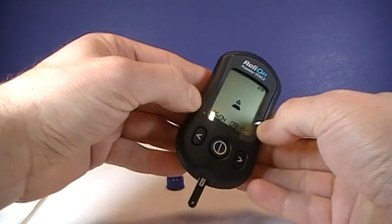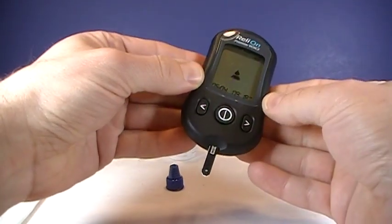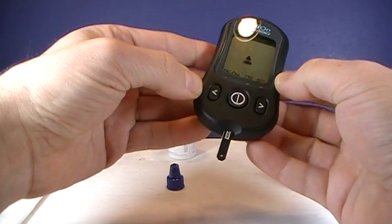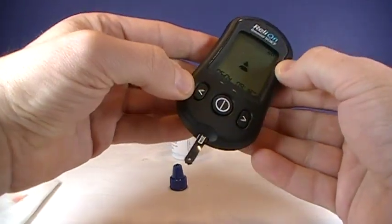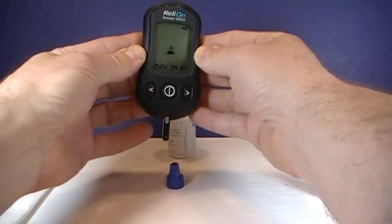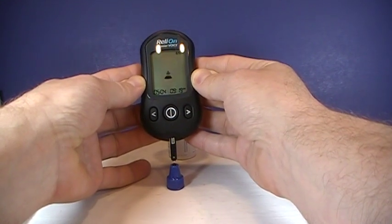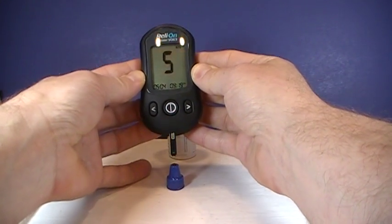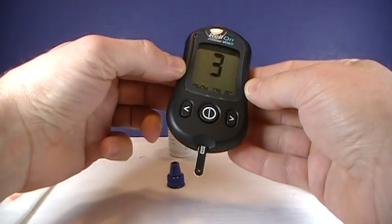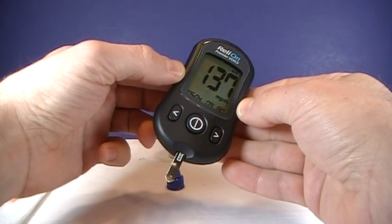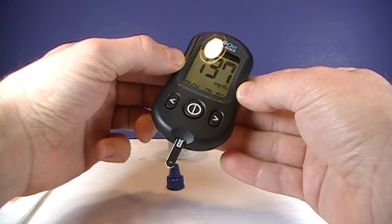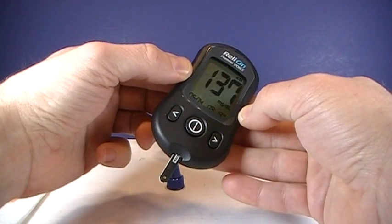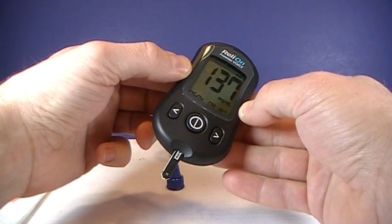You hold down... Control solution test, please apply a control solution onto the test strip. So we held down the left side for three seconds and now it's notating control solution and we just do again the same procedure. Your control solution test result is 137 milligrams per deciliter.